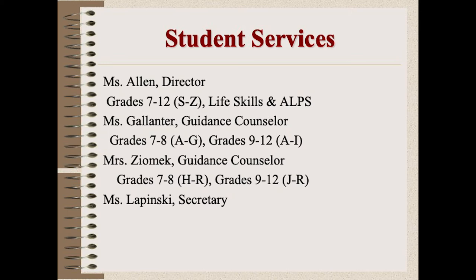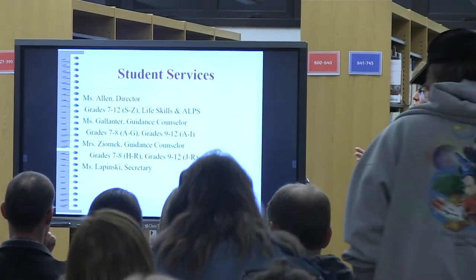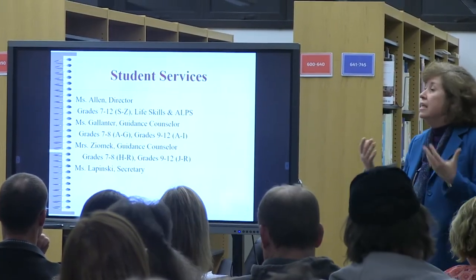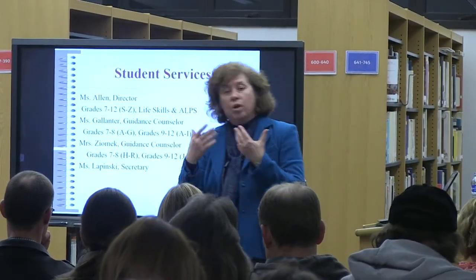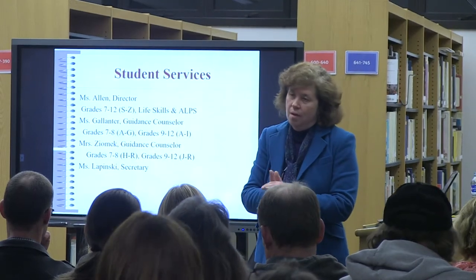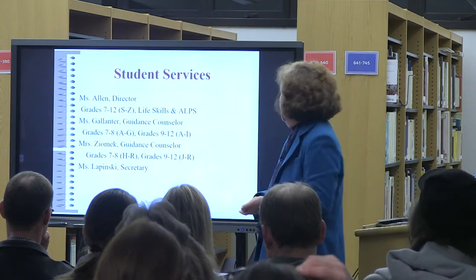There are three guidance counselors. I work with people at the very end of the alphabet, 7 through 12. Ms. Gallinger works with people at the beginning of the alphabet, 7 through 12. And Ms. Yonet works with students in the middle of the alphabet. If you don't know who your student's counselor is, it is on their schedule — they should have that in the front of their agenda book — or you can simply call the office if you have questions.